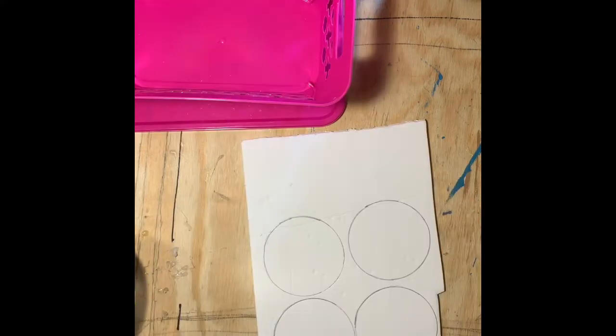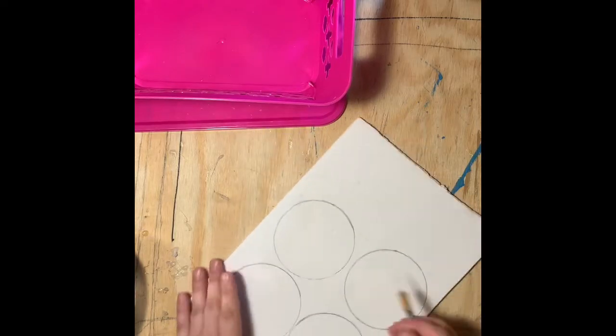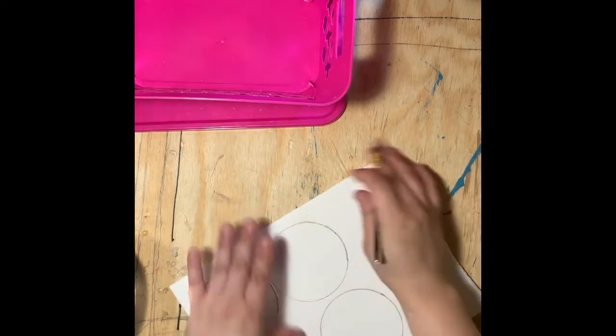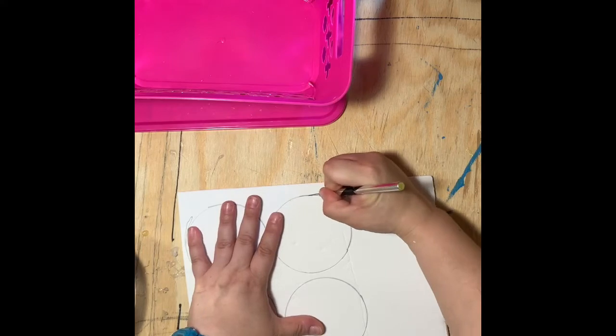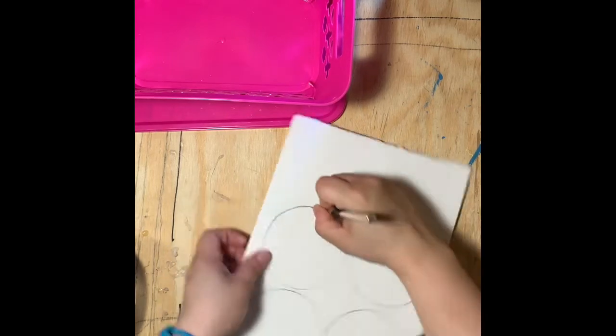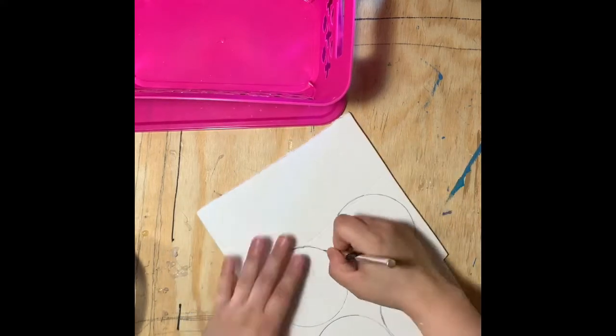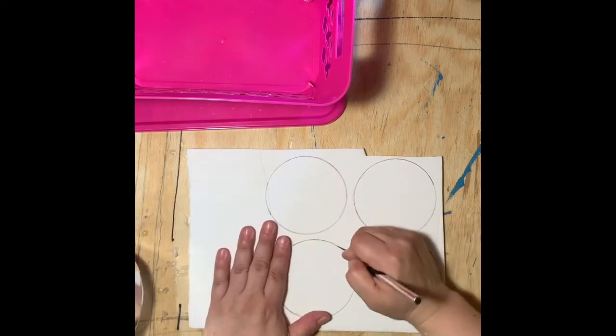If you're using foam board for your circles, I recommend using a utility knife or an X-Acto blade to cut out your circles. When making the circles for your burner, make sure your circles are a good size fit for the lid of your container.